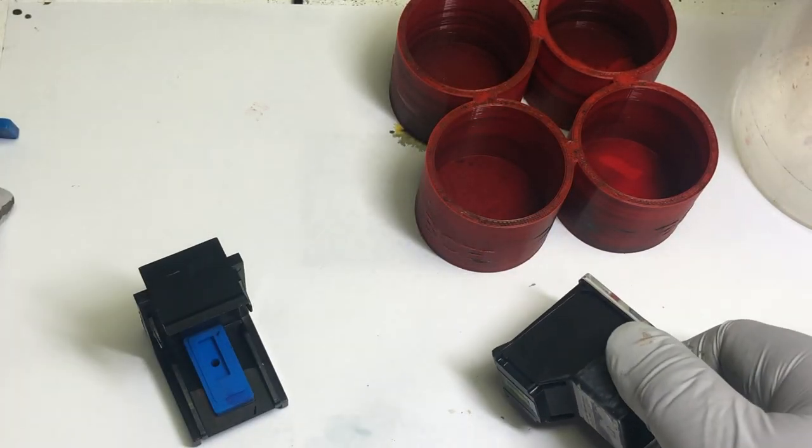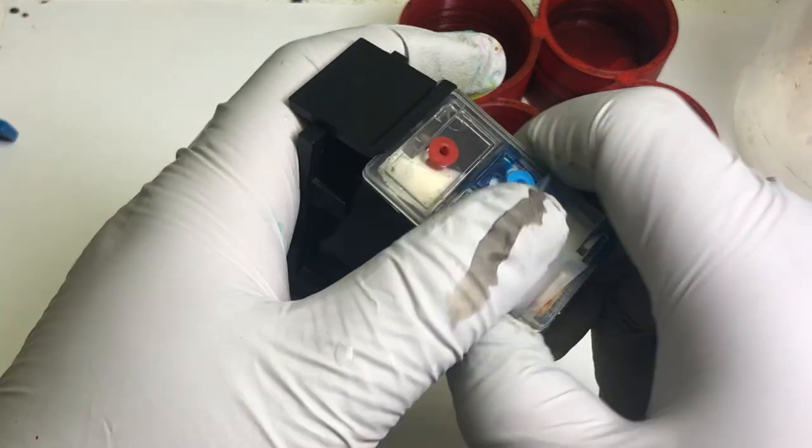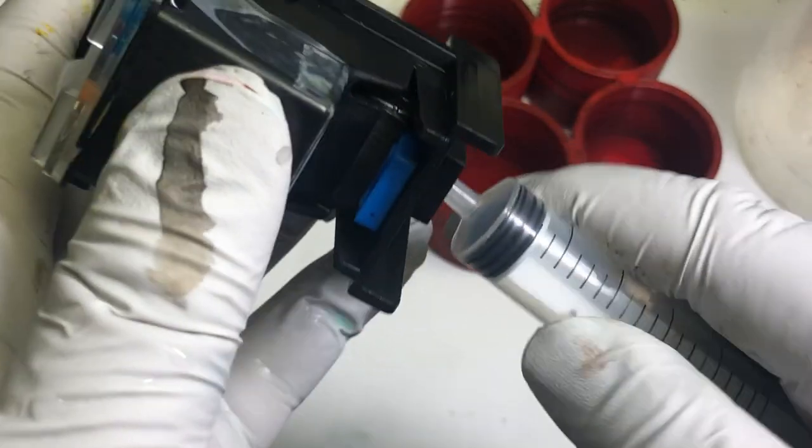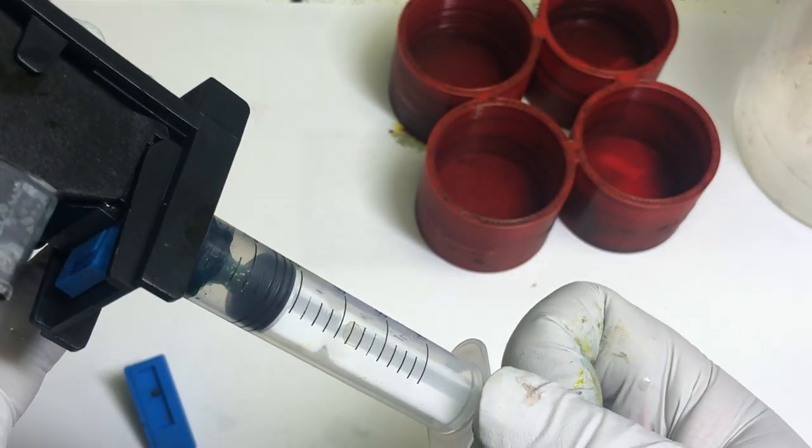The priming kit will have two rubber pads. One is longer, one is shorter. The shorter one is for the color tricolor cartridge. Just line it up, push it in, and draw some ink from the bottom.